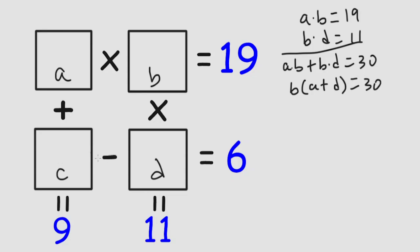Now we'll use addition and subtraction over here. We have A plus C is equal to 9, and C minus D is equal to 6.